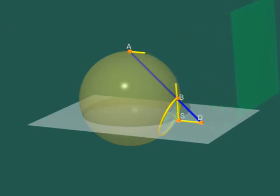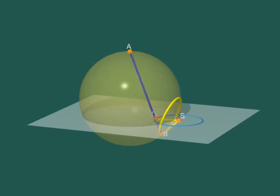Let's see. Saying that DS has a constant length means precisely that D describes a circle with centre S, so that the projection of our yellow circle on the horizontal plane through S is contained in a circle.